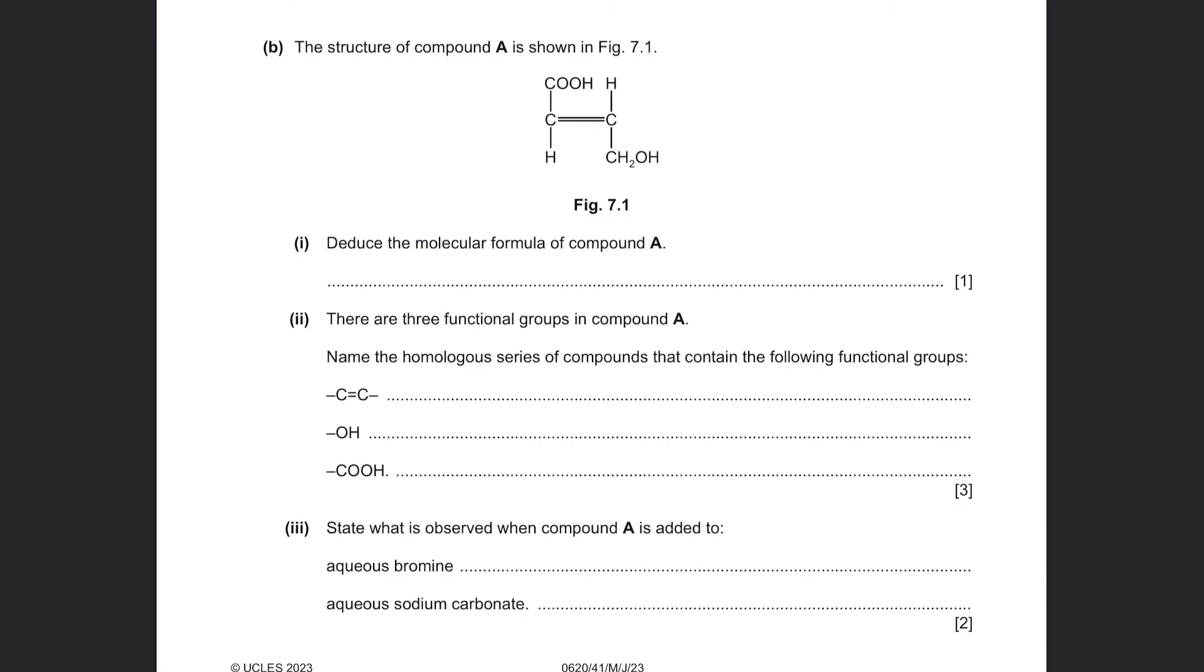Question B. The structure of compound A is shown in Figure 7.1. Part 1. Deduce the molecular formula of compound A. There are 4 carbon atoms in this compound, followed by 6 hydrogens and 3 oxygens.